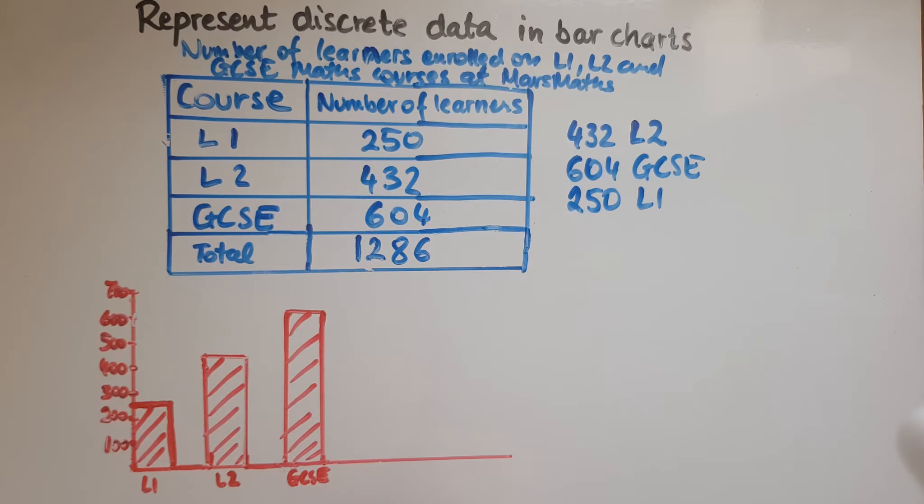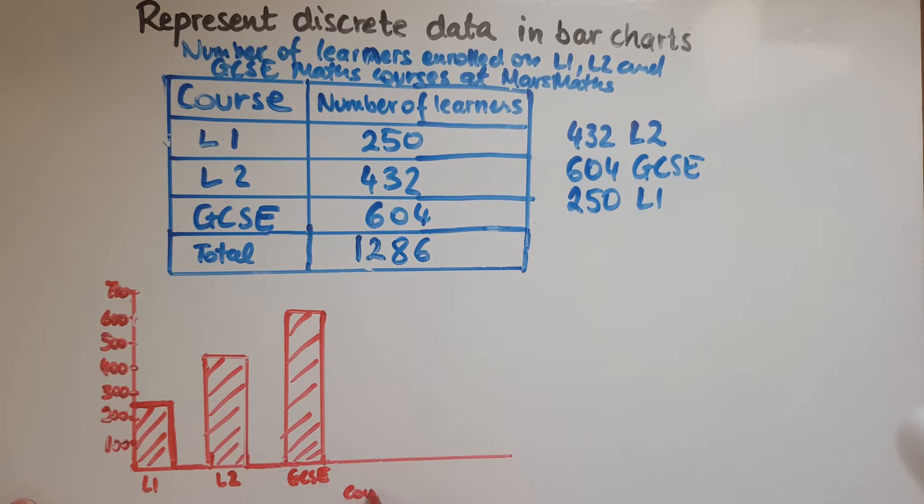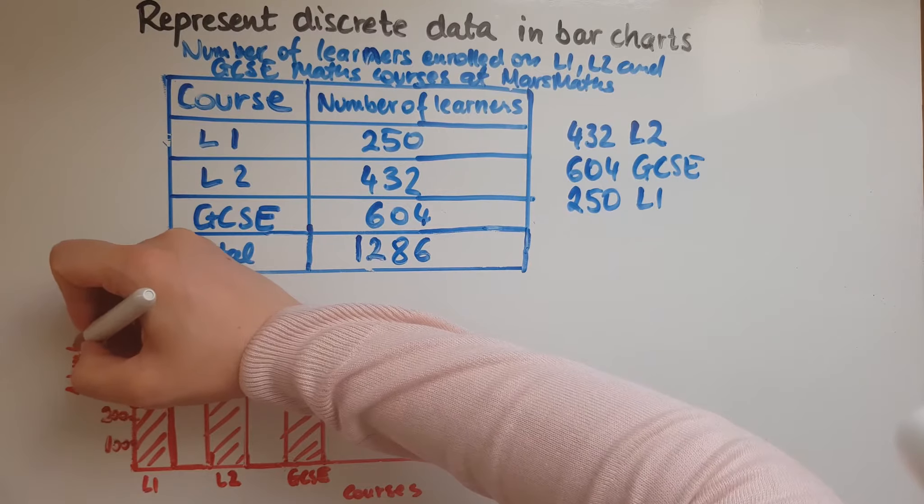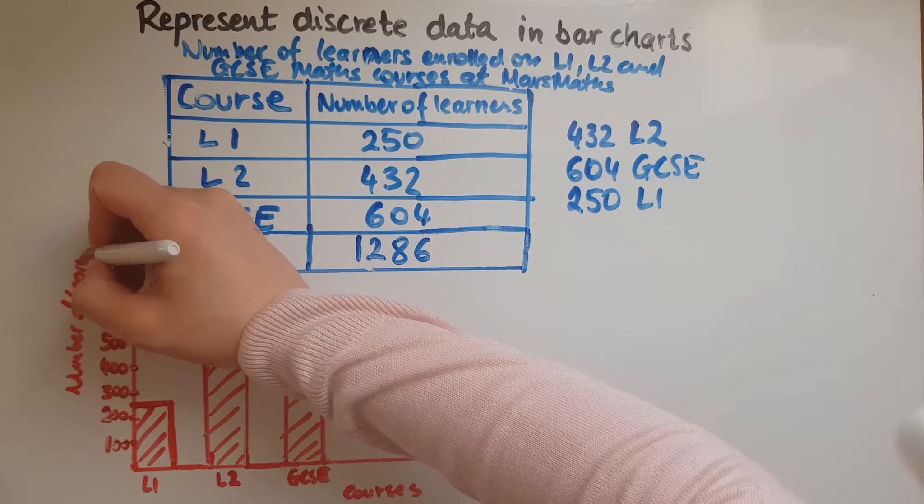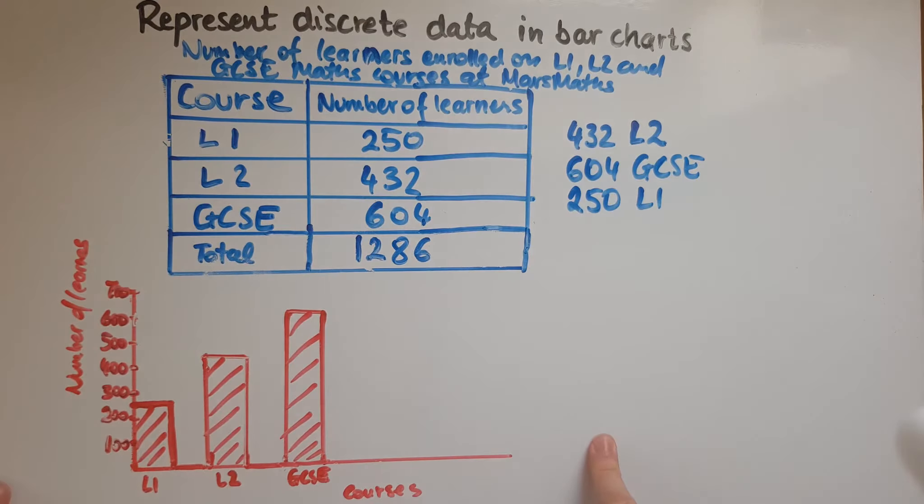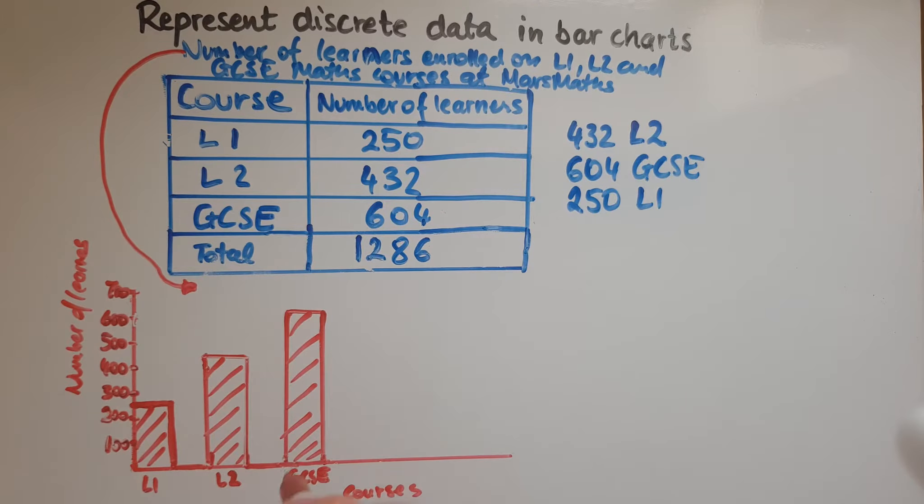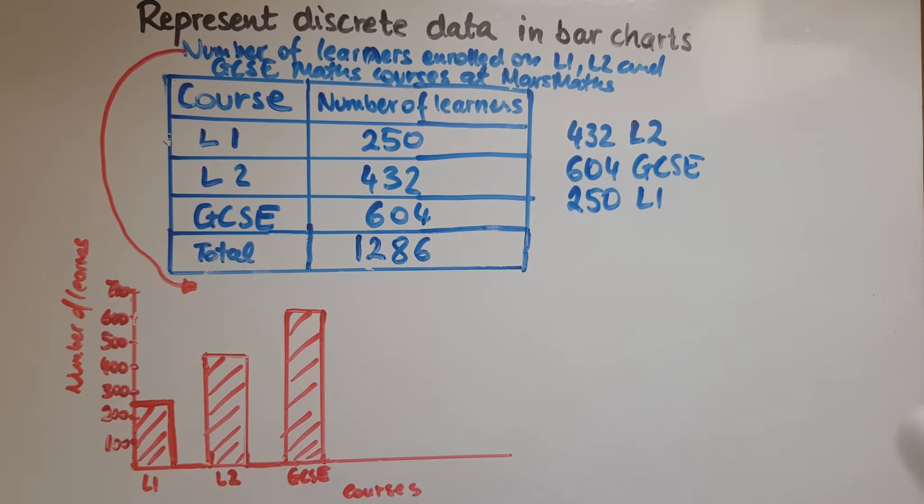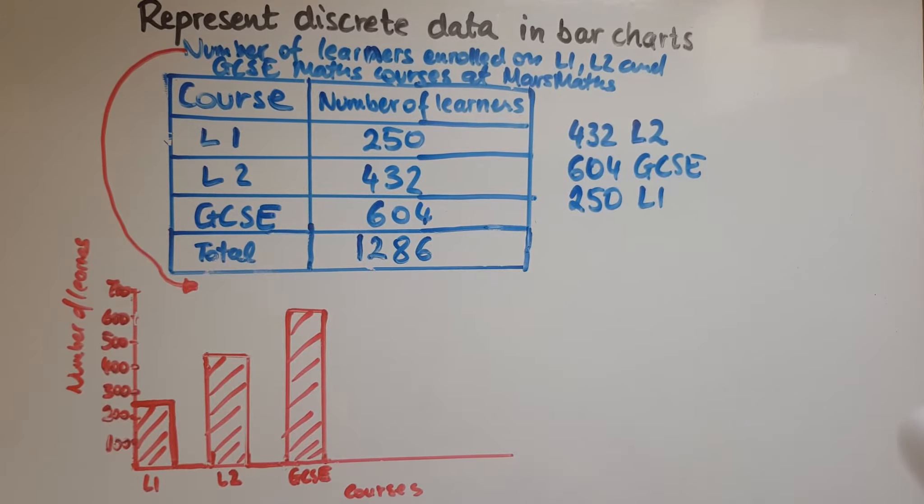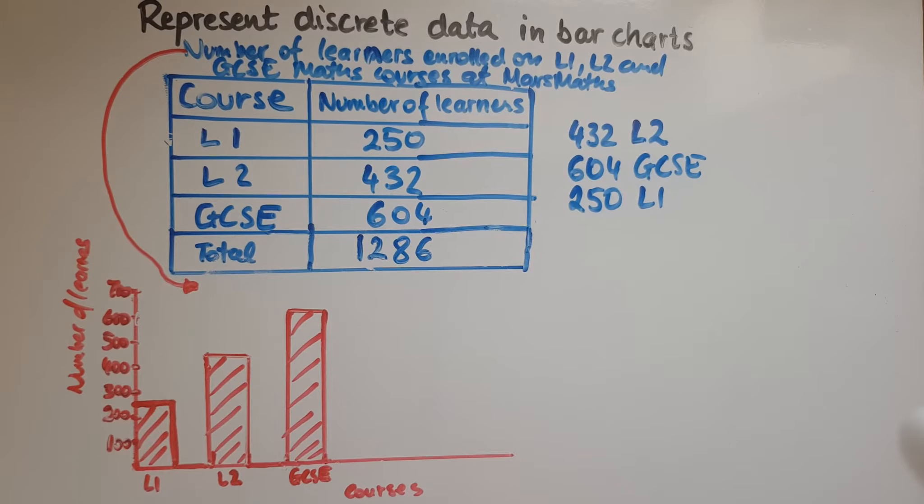And so these are level 1, level 2, and you can see what are the courses. And what are these? What do they tell us? This is about the number of learners. And in terms of a title, I'll just put the same title as what we put for the table: number of learners enrolled on level 1, level 2, GCSE maths courses at maths. So we've included everything so that the reader is able to actually read this bar chart and understand what we're talking about and how many and so on.